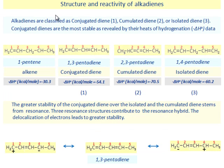Structure and reactivity of alkadienes. Alkadienes are classified as conjugated diene, accumulated diene or isolated diene.